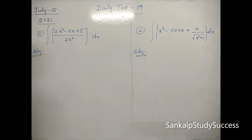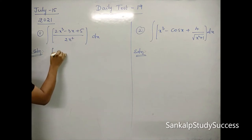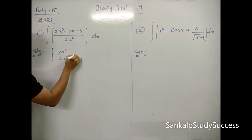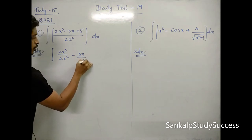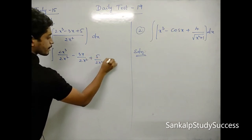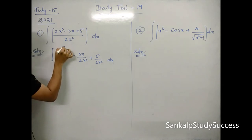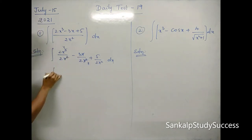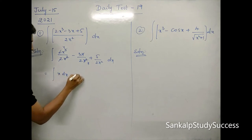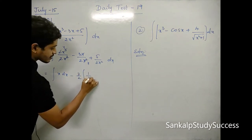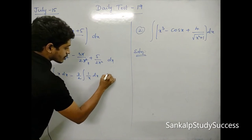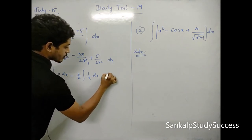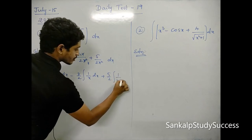Integral of (2x³ - 3x + 5) divided by 2x² dx. Now we will split the denominator. After splitting, x³ divided by 2x² gives x. Now we split the integration — 2 cancels, so we have integral x dx, minus 3/2 integral 1/x dx. Then the constant term is 5/2, so 5/2 times integral 1/x² dx. Right or not?